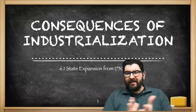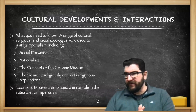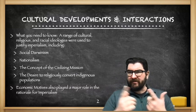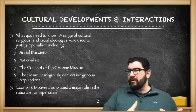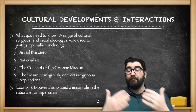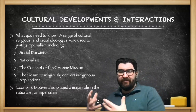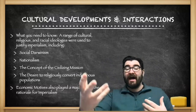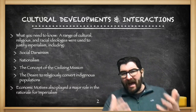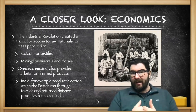We're back with the start of Unit 6, Consequences of Industrialization, and today we're going to talk about state expansion from 1750 to 1900. This is going to focus on the theme of cultural developments and interactions. European nations were using a number of cultural, religious, and racial ideologies to justify imperialism, including social Darwinism, nationalism, ideas of the civilizing mission, and a desire to religiously convert indigenous people. There are also economic motives playing a major role, so let's give a closer look to the economics behind imperialism.